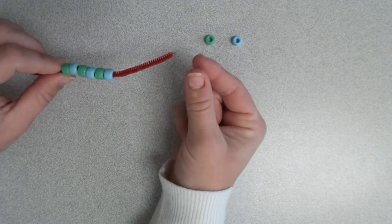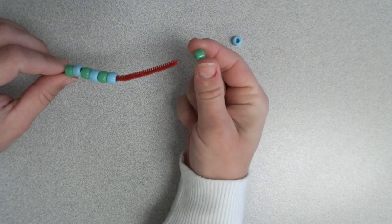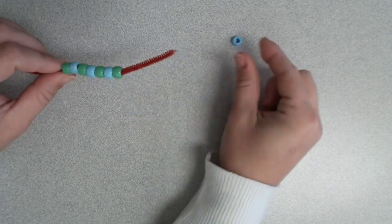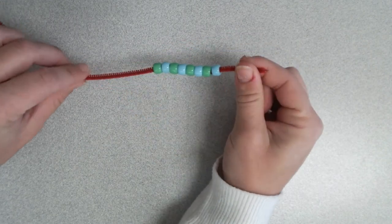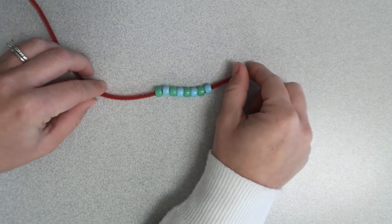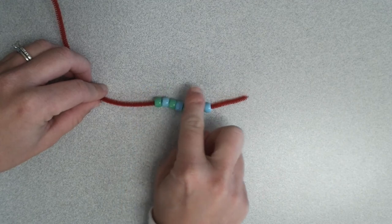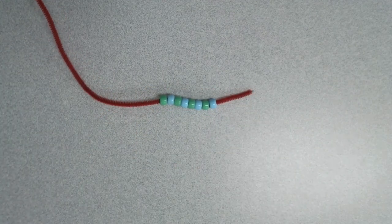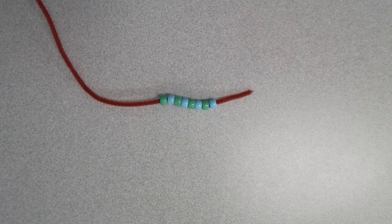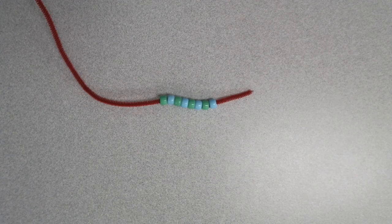The children are using their fine motor muscles in their fingers to thread the beads onto the pipe cleaner. So if you'd like to add another component to our activity, have them thread their beads onto the pipe cleaner. Alright friends, I hope you enjoyed today's activity. Bye-bye.